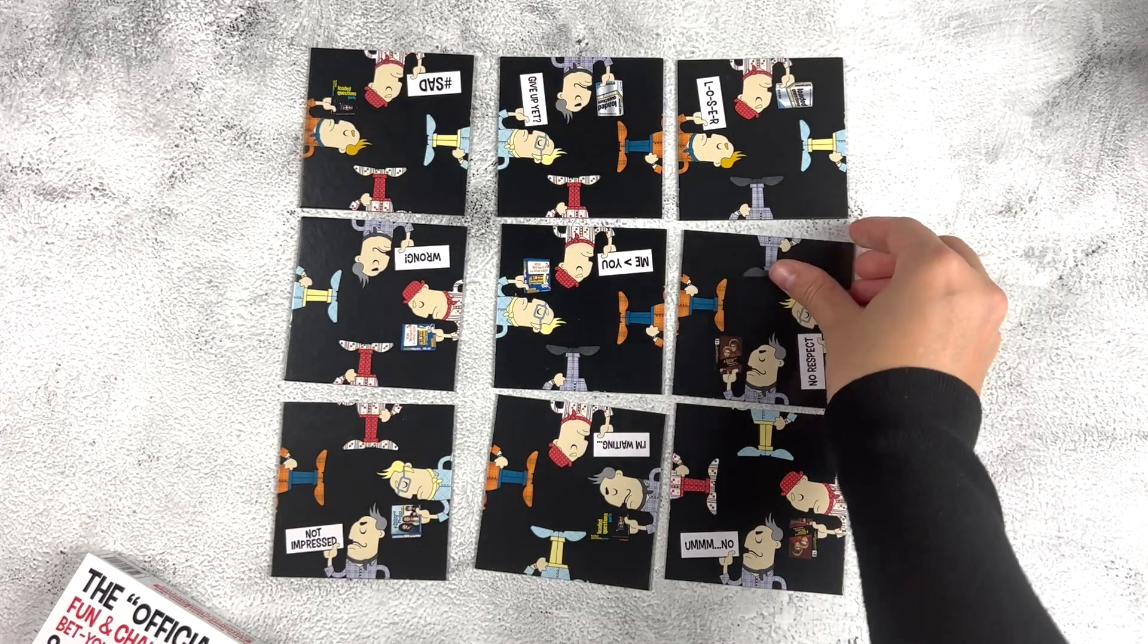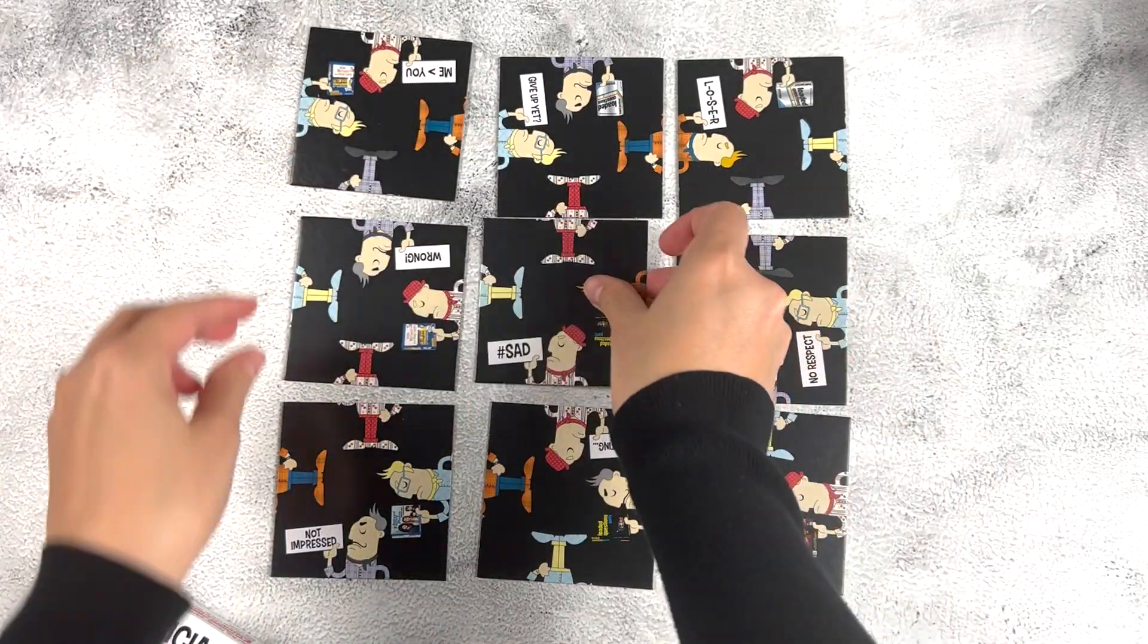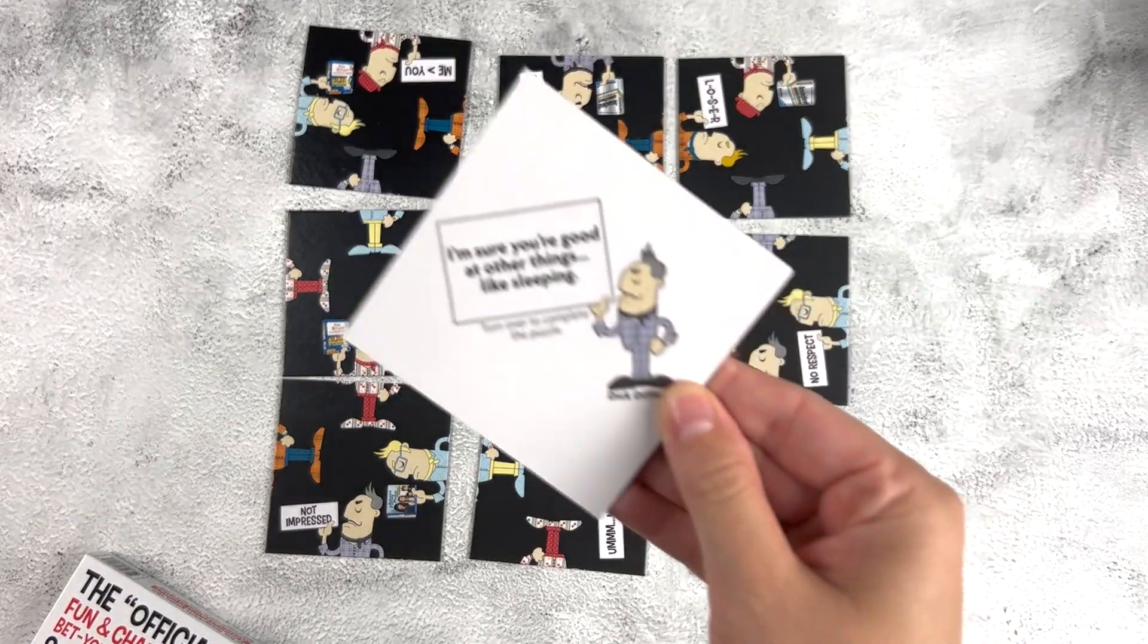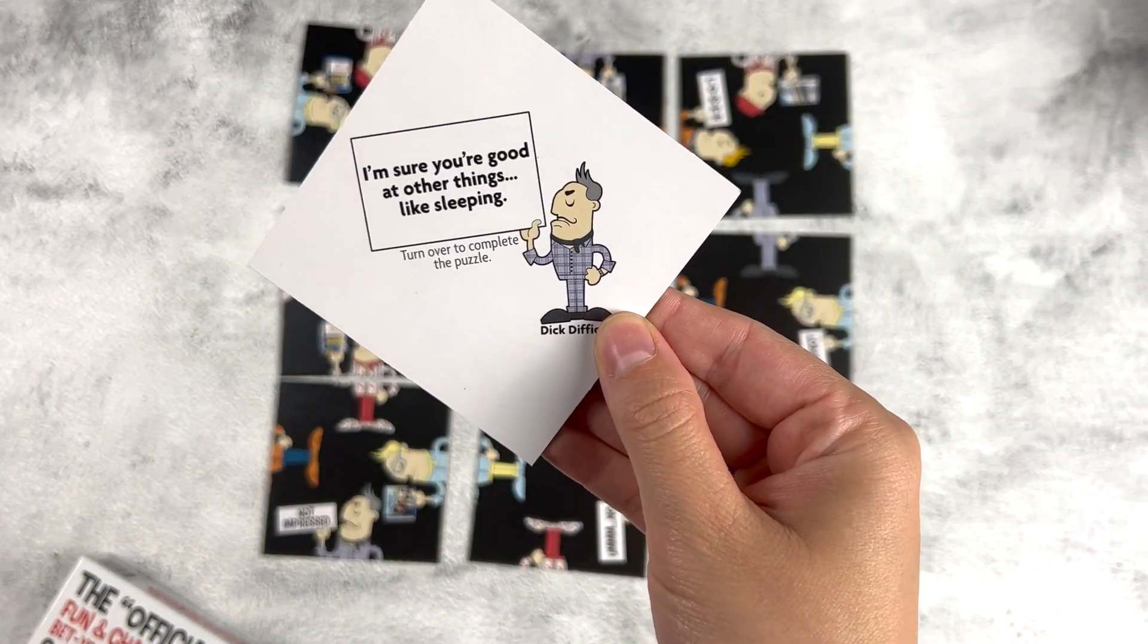As you try different combinations, the snarky difficult brothers will mock you, and whatever you do, ignore the constructive criticism on the reverse side of the pieces. Man, these guys are brutal.